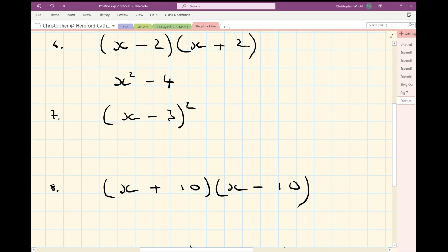This one, you need to think about this as being x minus three times x minus three. Gives me x squared minus three x and another minus three x minus six x. And minus three times minus three is plus nine.